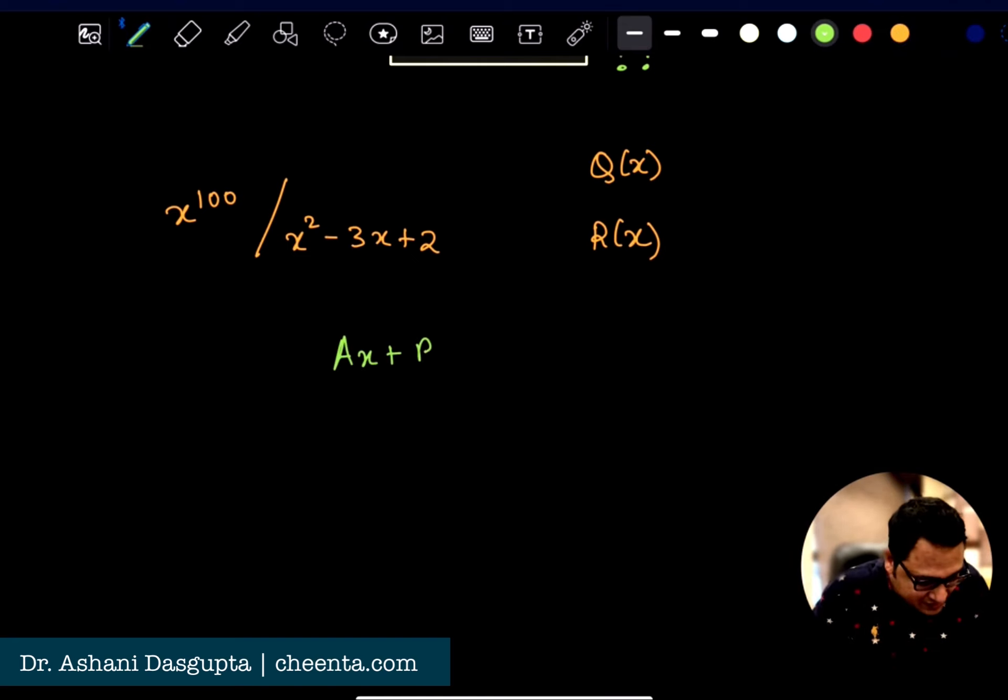We can write it as ax plus b. A first degree polynomial, a standard way of writing it, is ax plus b, where a is the coefficient of the x to the power 1 term and b is the constant. If we can find a and b, we will be able to find the remainder.